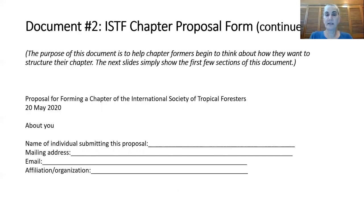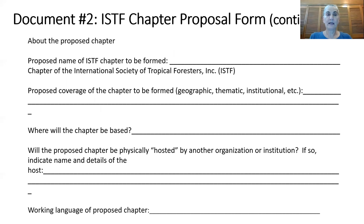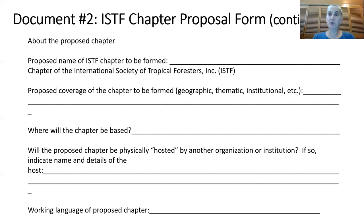Let's look at the chapter proposal form. The first section is where you put in information about yourself and your email address so we can contact you. Then about the proposed chapter: what are you going to name it? What kind of coverage — is it an institution? What is the geographic area? Where will the chapter be based? Will it be hosted by another institution? What will be the language you will work in?